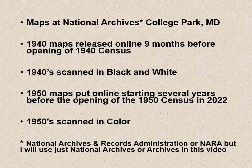The original maps, if they still exist, are at the National Archives in College Park, Maryland, where their cartography unit resides. In 1940, those ED maps were released online about nine months before the opening of that census, and they were scanned in black and white — the film is in black and white, and I'll show you why that's important. The 1950 maps were put online around 2014, before the 1950 census becomes public in 2022, and those maps are in color.